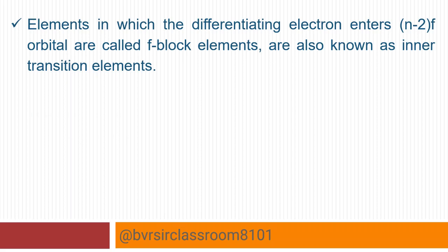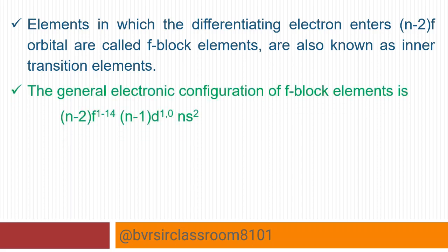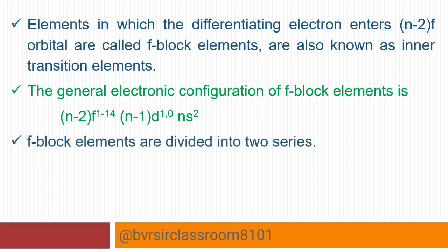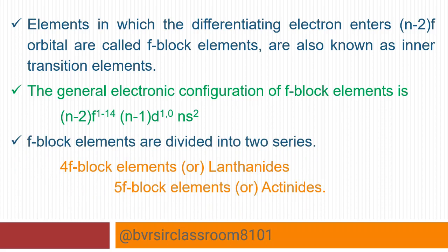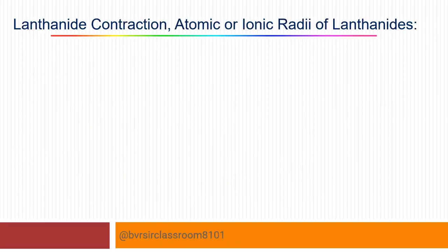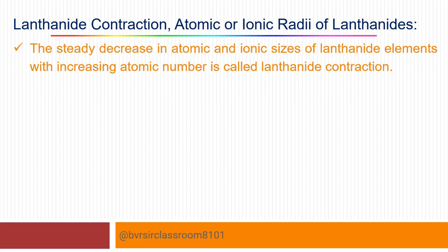The general electronic configuration is (n-2)f 1-14, (n-1)d 0-1, ns2. F block elements are divided into two series: lanthanides and actinides. The steady decrease in atomic and ionic sizes of lanthanide elements with increasing atomic number is called lanthanide contraction.